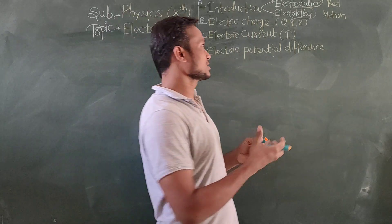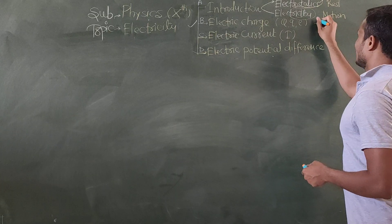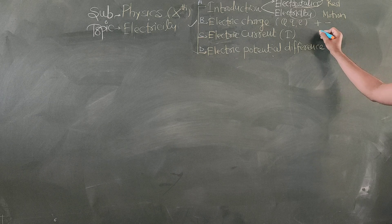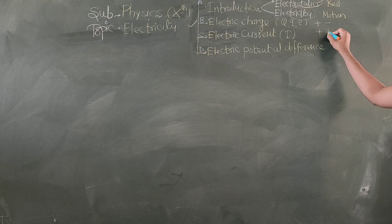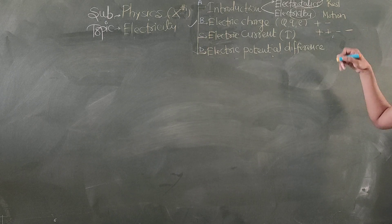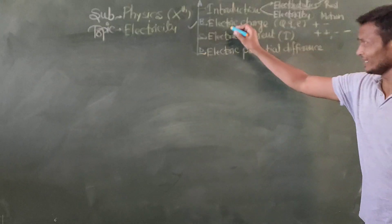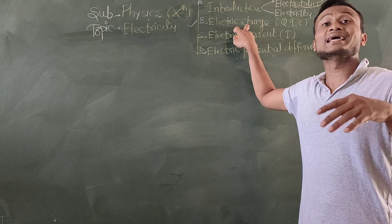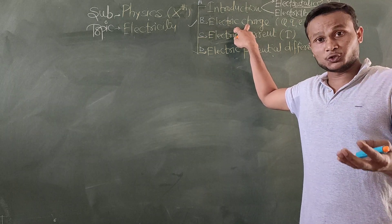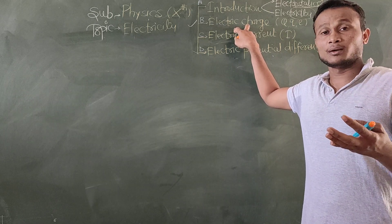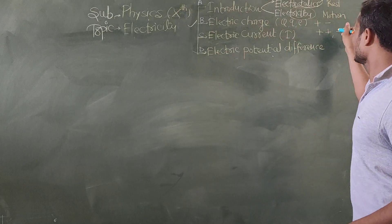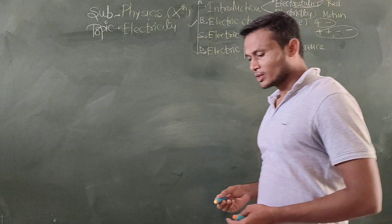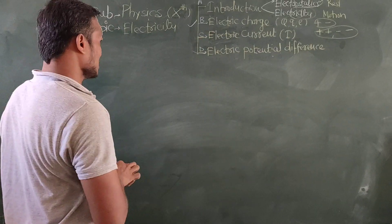Now when they show attraction, the charges are unlike — for example, plus and minus — they will attract each other. When charges are like, such as plus-plus or minus-minus, they will repel each other. So we exactly understand what we mean by electric charge: it is a property of elementary particles such as proton and electron by virtue of which they either show attraction or repulsion.